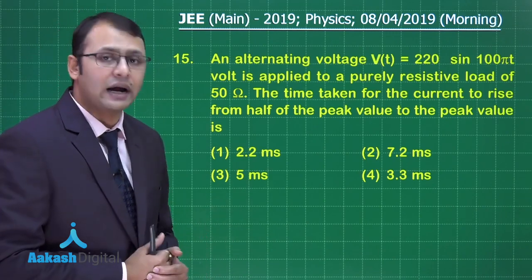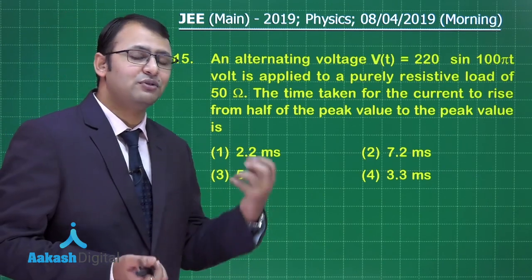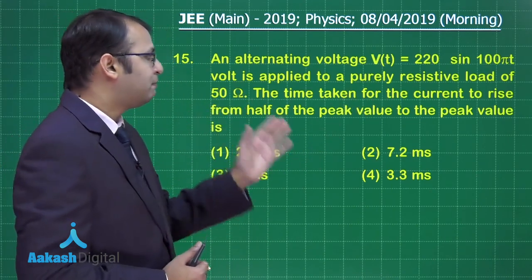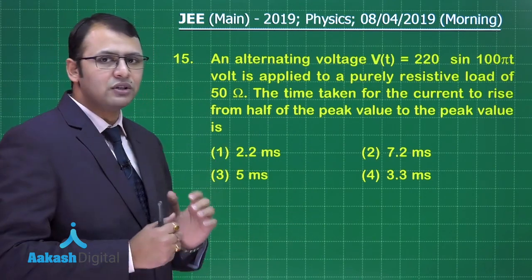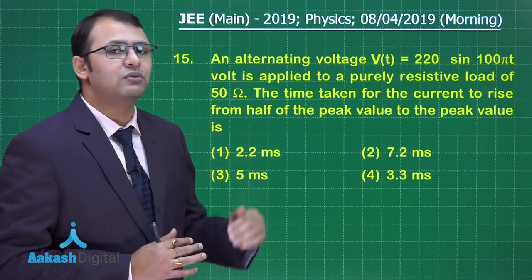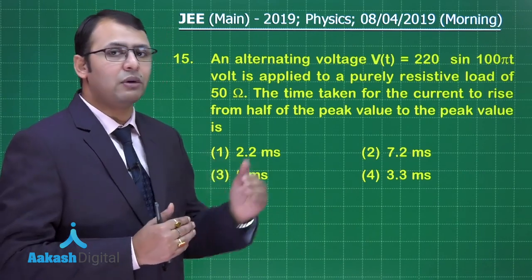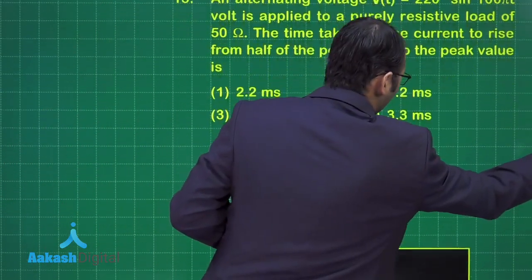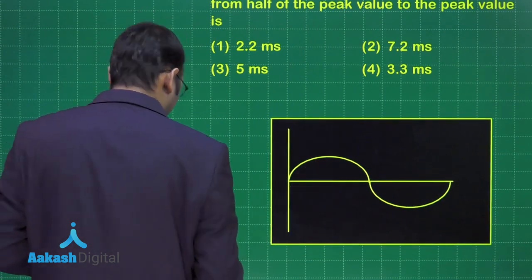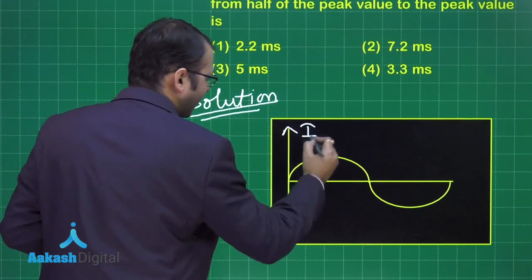Question 15 belongs to electromagnetism from the chapter on alternating current, but it will be solved using the concept of oscillation and waves. An alternating sinusoidal voltage is applied to a purely resistive load of 50 ohms. We need the time taken for the current to rise from half of the peak value, I₀/2, to the peak value I₀. A current-time diagram is shown to understand this.